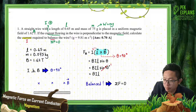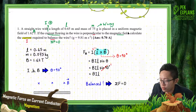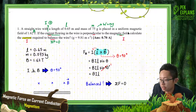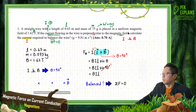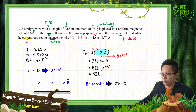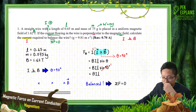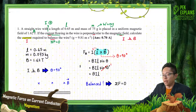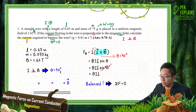The current and magnetic field are perpendicular to each other. So, current perpendicular to the field means theta equals 90 degrees. Let us now look at the equation for magnetic force on a current-carrying conductor.